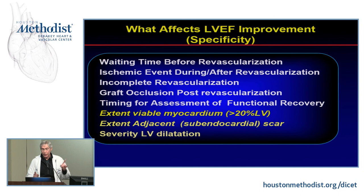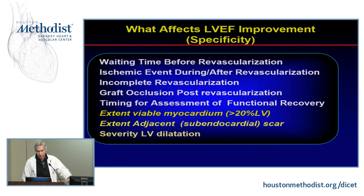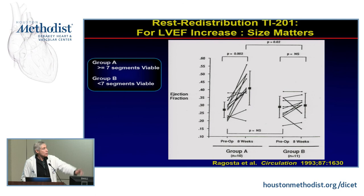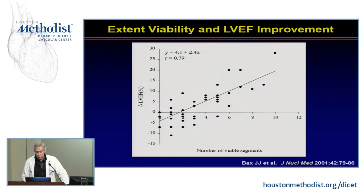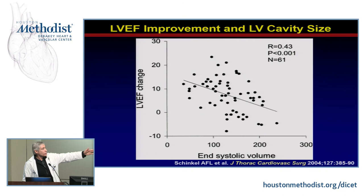You need to give the myocardium time to improve after revascularization. The extent of viable myocardium is critical — if you have one viable myocyte it won't help; you need a large area to see improvement. Data from George Beller's laboratory showed that more than seven viable segments corresponded to improved ejection fraction while fewer than seven did not. Jerome Bach's data also showed that greater number of viable segments corresponded to much greater likelihood of improving ejection fraction and reducing end-systolic volume.